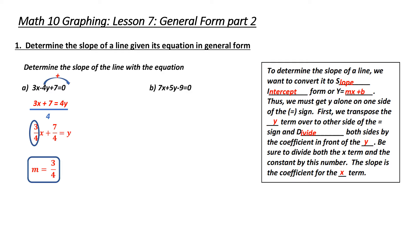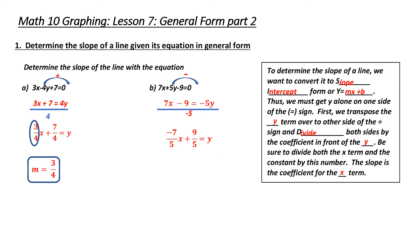Stop this recording now and try b, and I'll do it in a minute. We're back. Again, I'm going to convert this to slope-intercept form to find the slope, so I need to isolate for y. To isolate for y in this situation, I'm going to subtract 5y from both sides. I now divide both sides by 5, and I wind up with a slope of negative 7 over 5 in front of the x. Therefore, the slope of this equation is going to be negative 7 over 5.